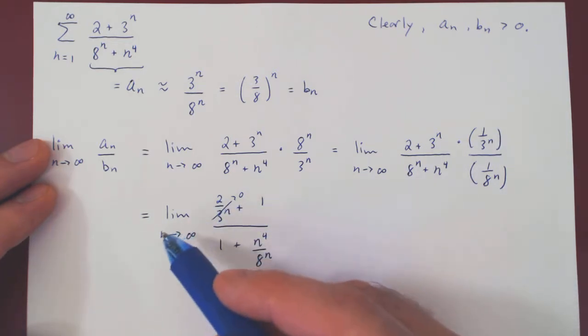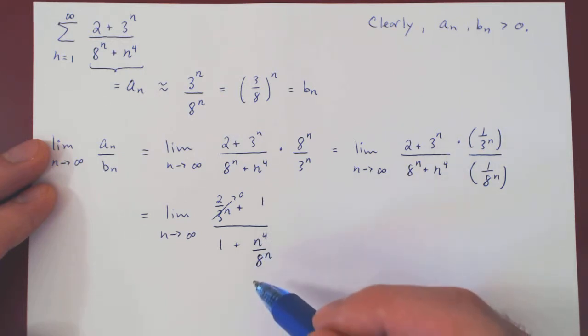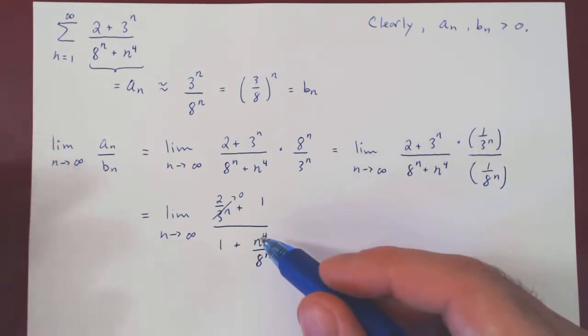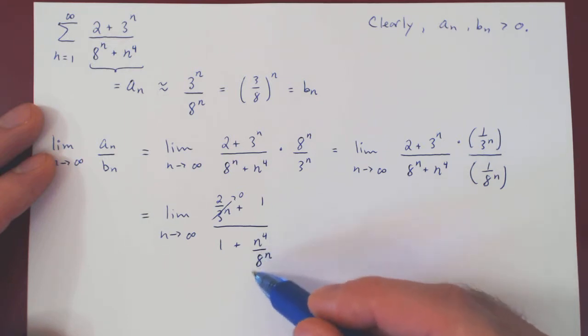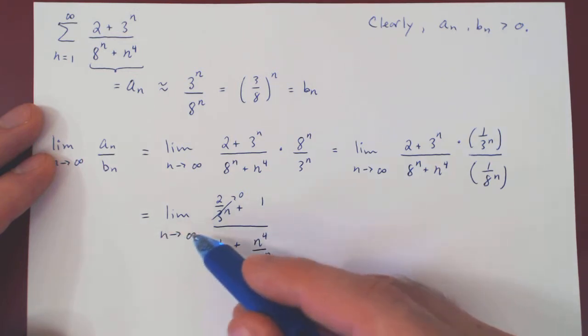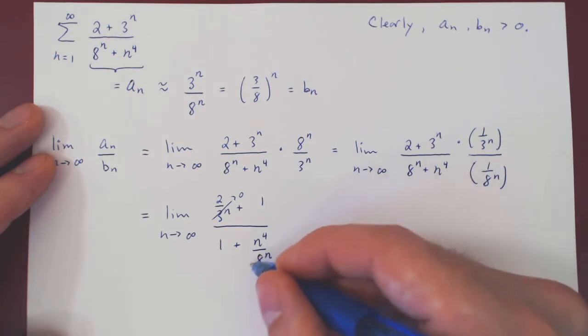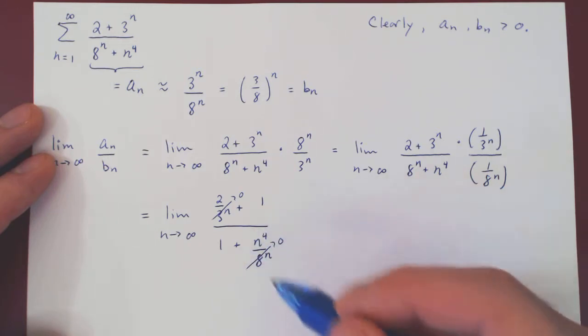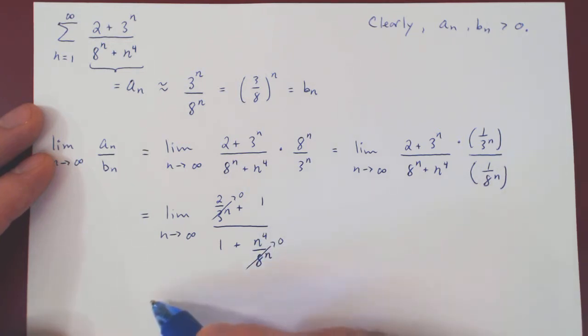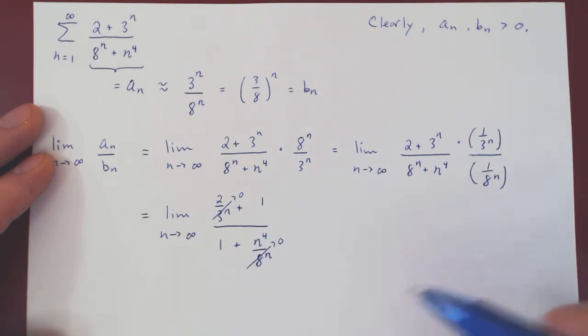This is not so trivial. As n goes to infinity, n to the 4 goes to infinity, 8 to the n goes to infinity. But if you recall, what we have on top is a power function, what we have on the bottom is an exponential function. So 8 to the n is way larger than n to the 4. So as n goes to infinity, 8 to the n will kill off n to the 4, and the whole thing will shrink to 0, recalling again our hierarchy of functions. If you're not comfortable with this, then you can simply look at the limit as n goes to infinity of n to the 4 over 8 to the n. You have an infinity over infinity case. If you apply L'Hopital's rule 4 times, you will arrive at the same conclusion.